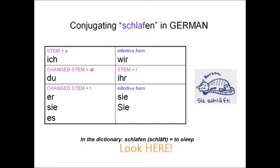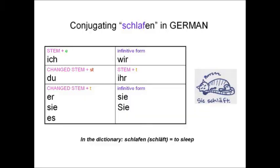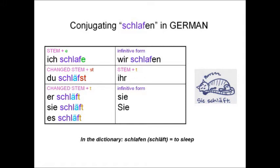Let's take a look at a couple other ones. This is the verb schlafen. In the dictionary you would see schlafen, which means to sleep, and then you'd see schläft. Add the umlaut for the du and the er, sie, es forms. Ich schlafe. Du schläfst. Er schläft. Wir schlafen. Ihr schlaft. Sie schlafen.